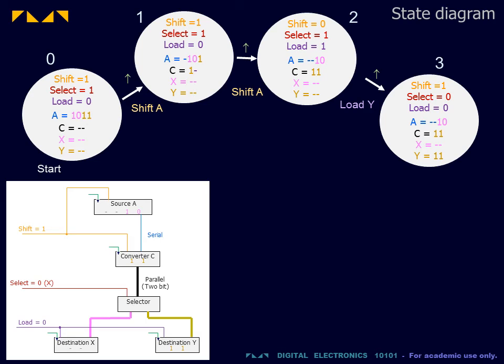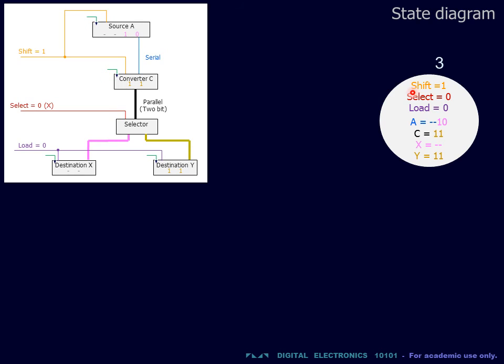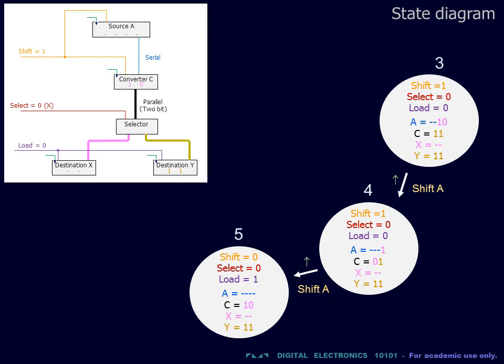We now select the destination x and repeat the two shifts. The two bits destined for x have now been loaded into the data converter. We now proceed to load the destination x.